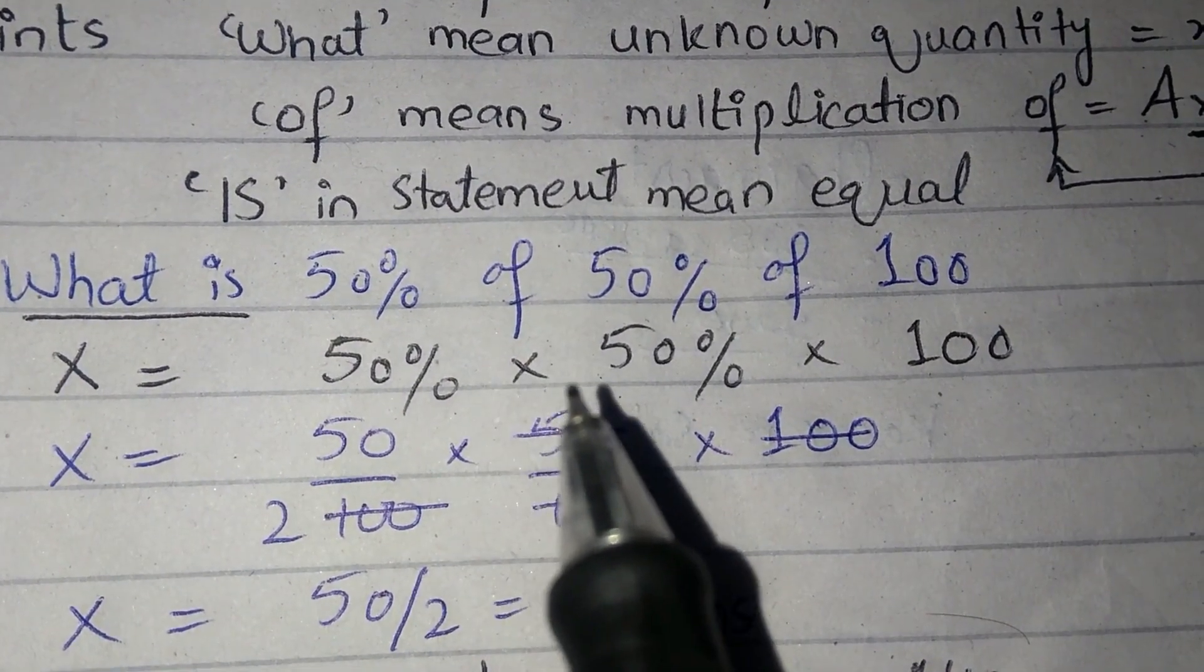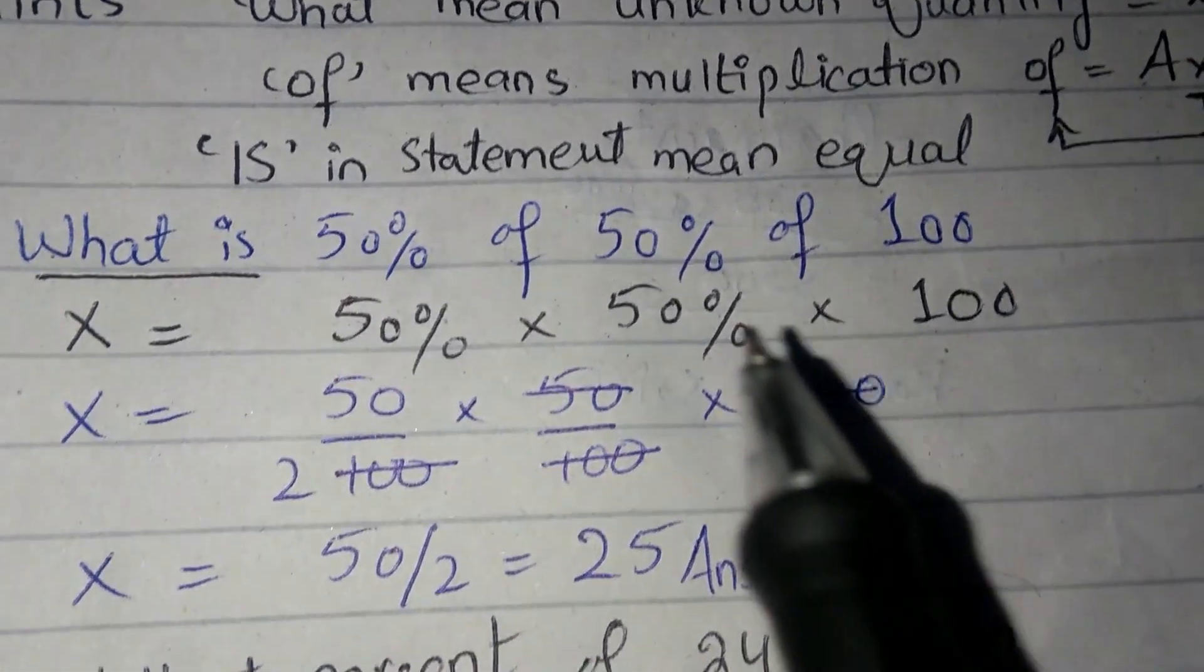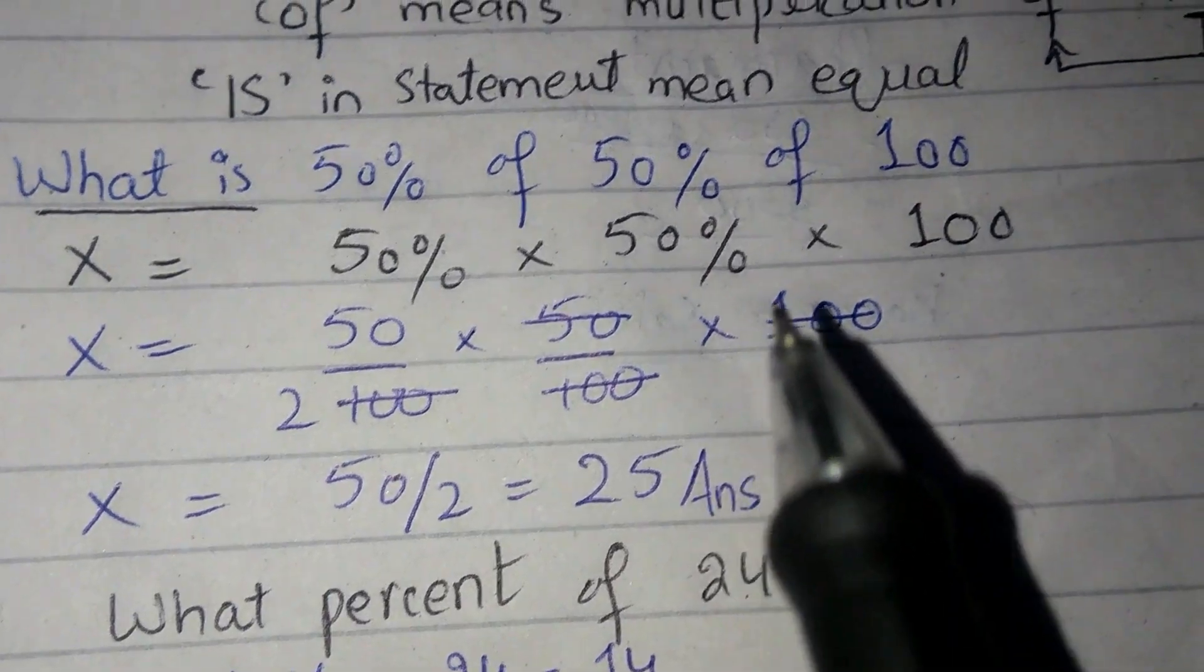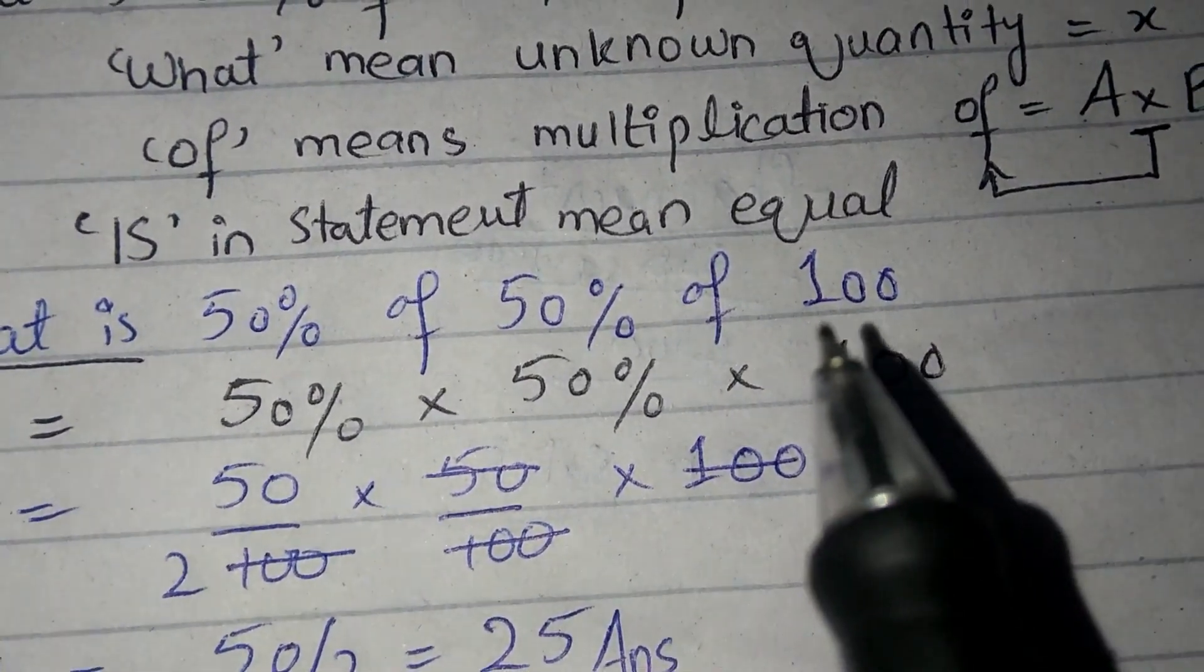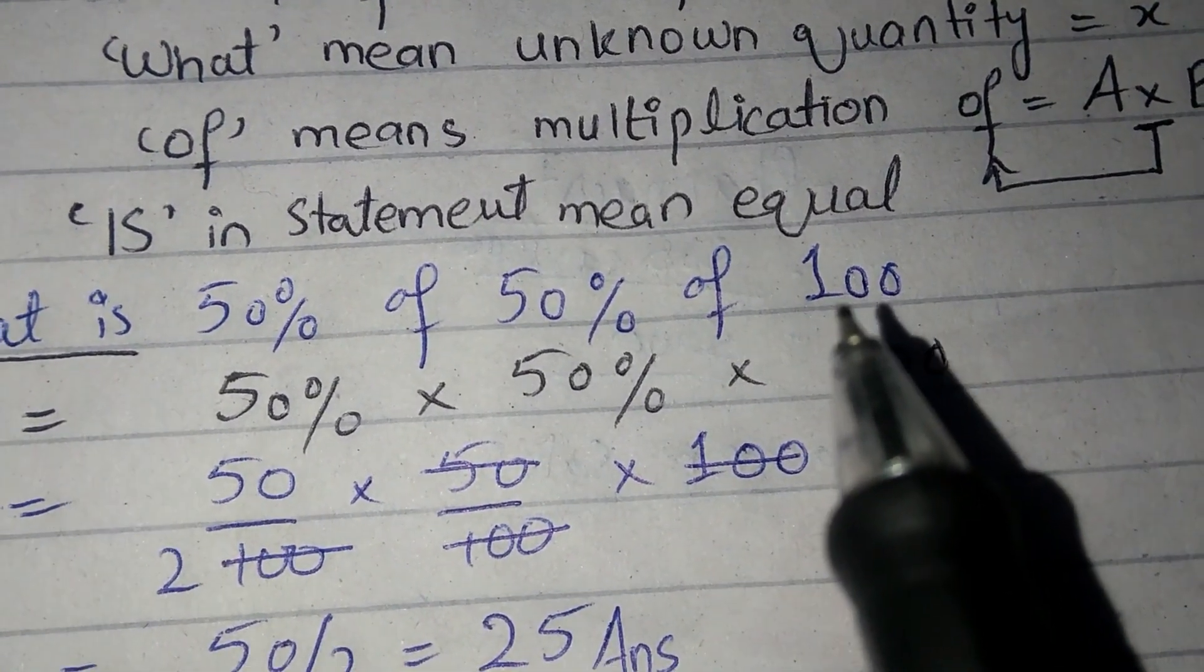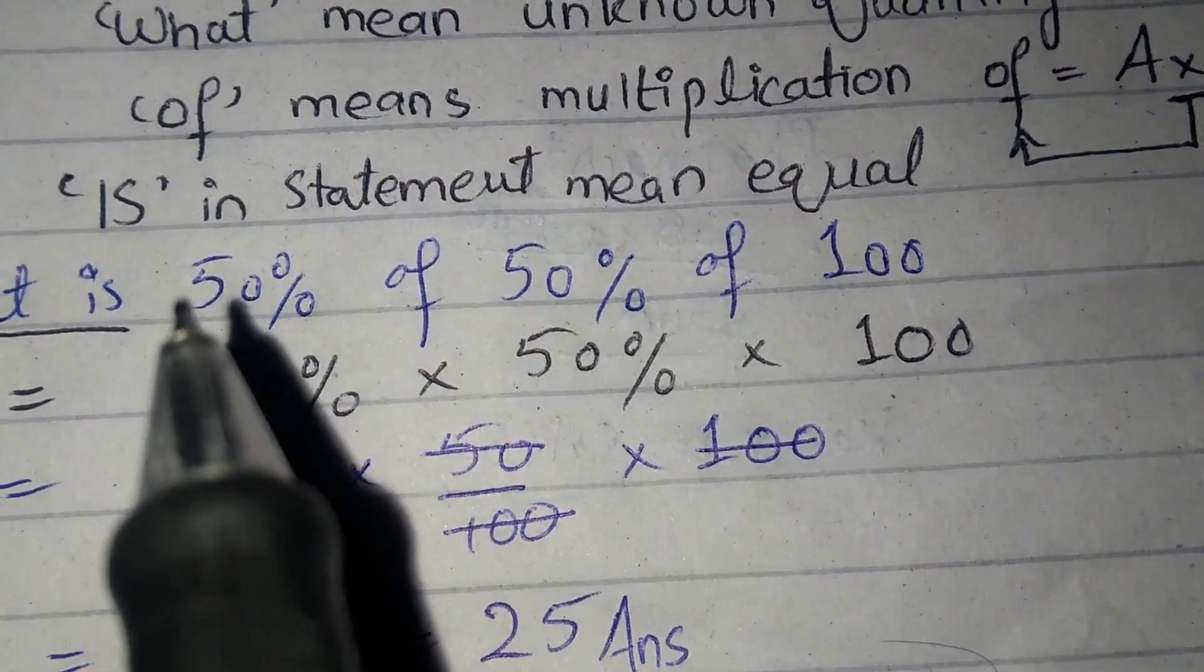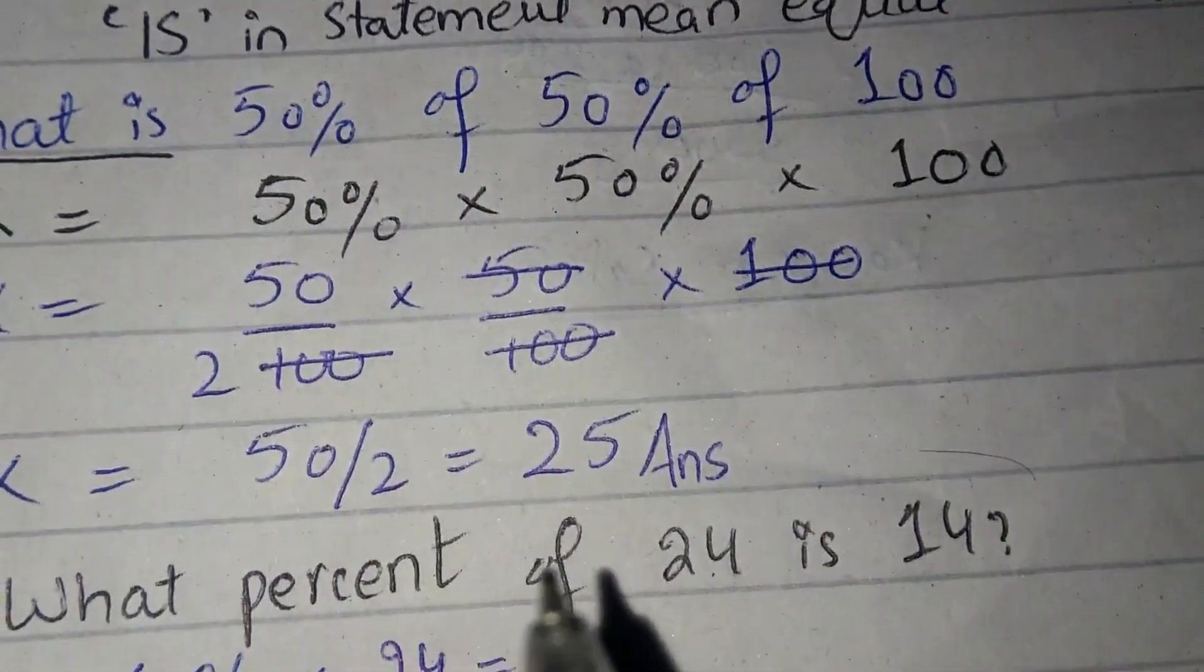If you have to solve it, we will be 25 answers. Let's look at, by 100 percent, 50 percent means 50 by 100. Then when 50 is 50 percent, we will be 25 answers.